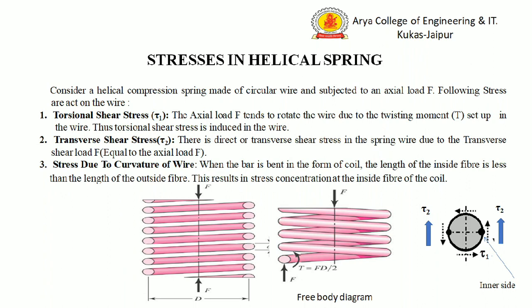Stresses in helical spring: Let us take a helical compression spring subjected to an axial force F, as shown in this figure. Due to this force F, three types of stresses are produced in the spring. First is torsional shear stress Tau 1. Second is transverse shear stress Tau 2. And third is the stress due to the curvature of the wire.